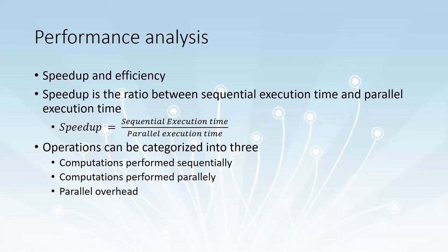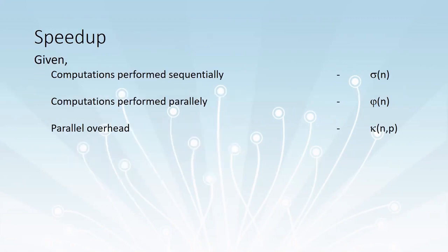Speedup is the ratio between the sequential execution time and the parallel execution time. For any parallel program, there will be three components: some area of code which can be executed sequentially, some area which can be executed in parallel, and the communication overhead due to this parallel execution. With this simple categorization, we define the terms sigma of n, phi of n, and kappa of n.